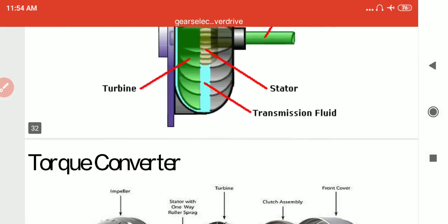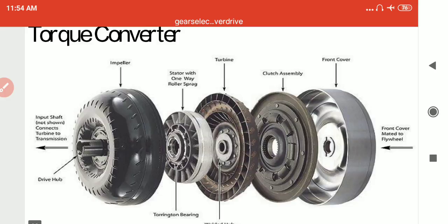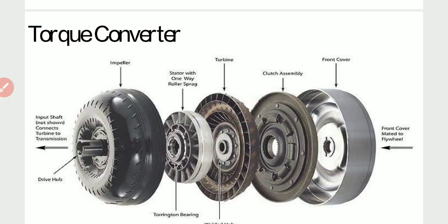The inner parts of the torque converter are: first the impeller, then the stator with a one-way roller sprag clutch assembly, and the front cover.